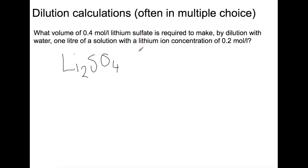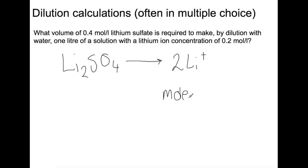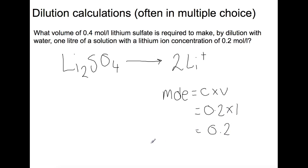If we read on in the question, we find out that we're looking at lithium ions, so we need to write out how many lithium ions we get for each mole of lithium sulfate. The question wants to know what volume of lithium sulfate solution we would need to make a solution by dilution. We've been given the concentration and volume of the lithium ion concentration, so we can work out the moles of lithium present using the moles equals concentration times volume equation. This gives us 0.2 moles of lithium ions.